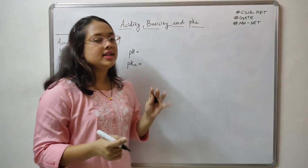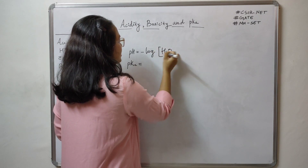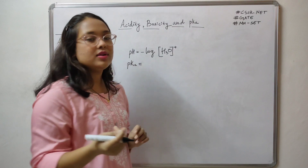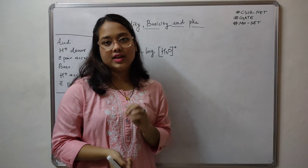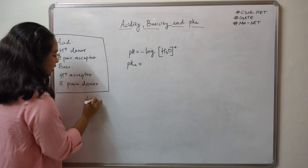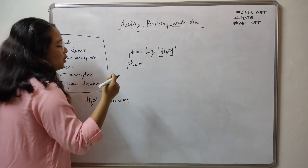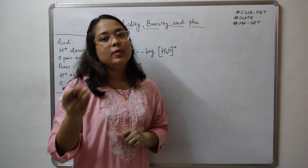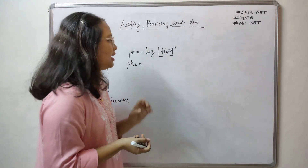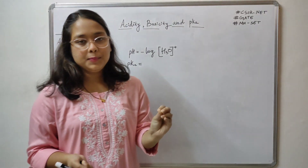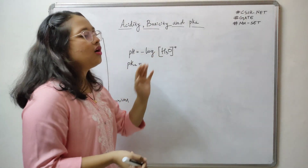The pH of any solution is defined as the negative log of the concentration of H3O+. So pH = -log[H3O+]. H3O+ is the hydronium ion, which is the same as H+. Whenever we dissolve an acid in an aqueous medium, the H+ that is released gets picked up by a molecule of water: H+ + H2O gives the hydronium ion H3O+.